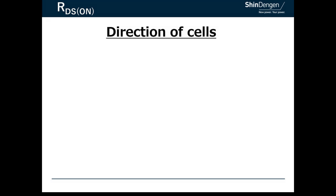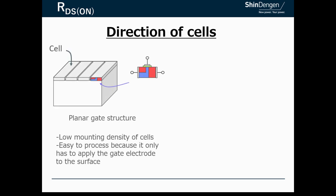You can also increase the implementation density of the cells by devising the direction of the cells. The planar gate structure does not increase the density of cell mounting, but it is easy to process and low cost. High voltage MOSFETs generally use a low cost planar structure because the channel resistance accounts for a small percentage of RDS(ON).